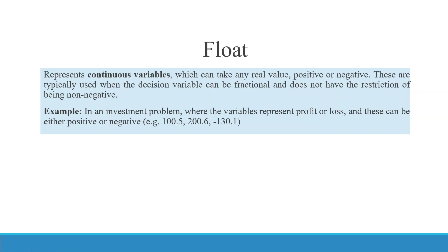Now, the ways in which we can define a variable. The first one is float. Float represents continuous variables which can take any real value, positive or negative. These are typically used when the decision variable can be fractional and does not have the restriction of being non-negative. For example, in an investment problem where variables represent profit or loss, values like 100.5, 200.6, or even negative values like -130.1 are possible. Fractions and negative values are both plausible.